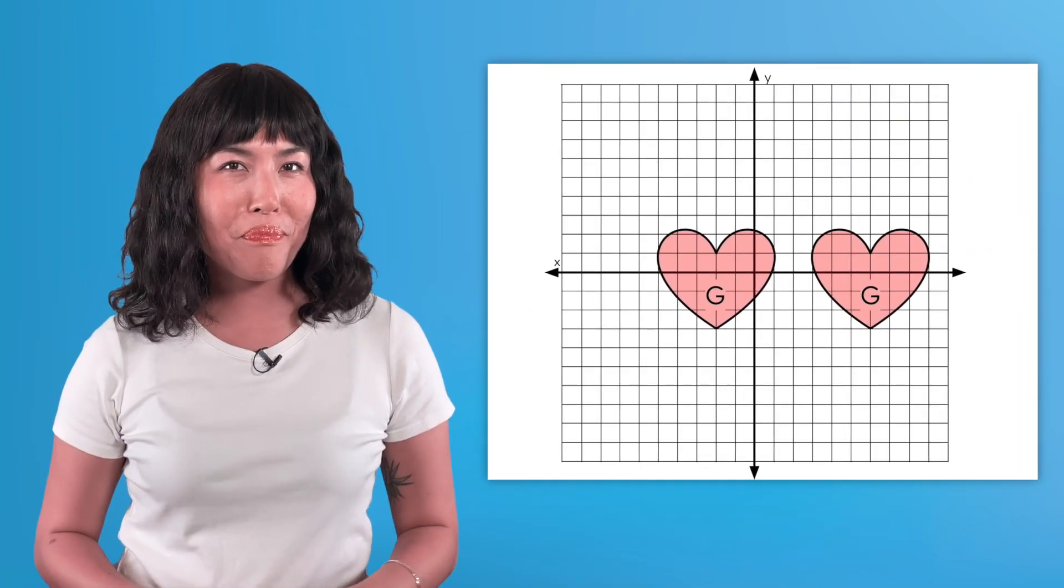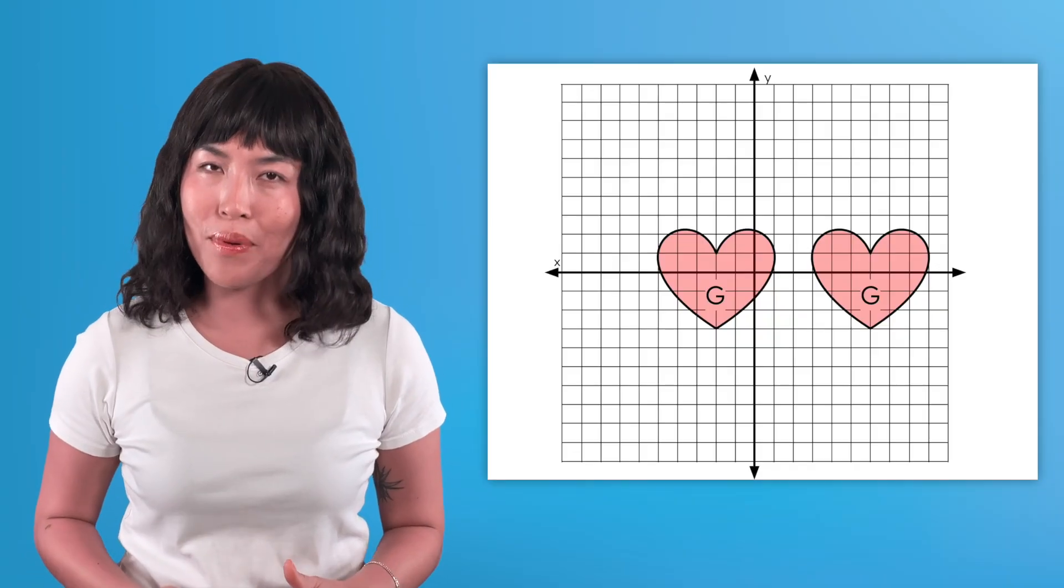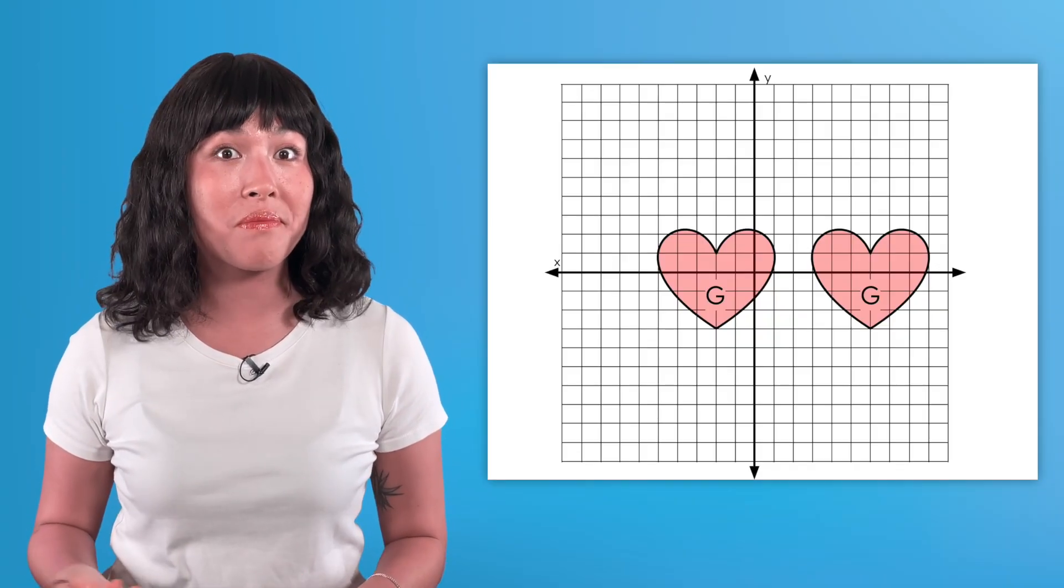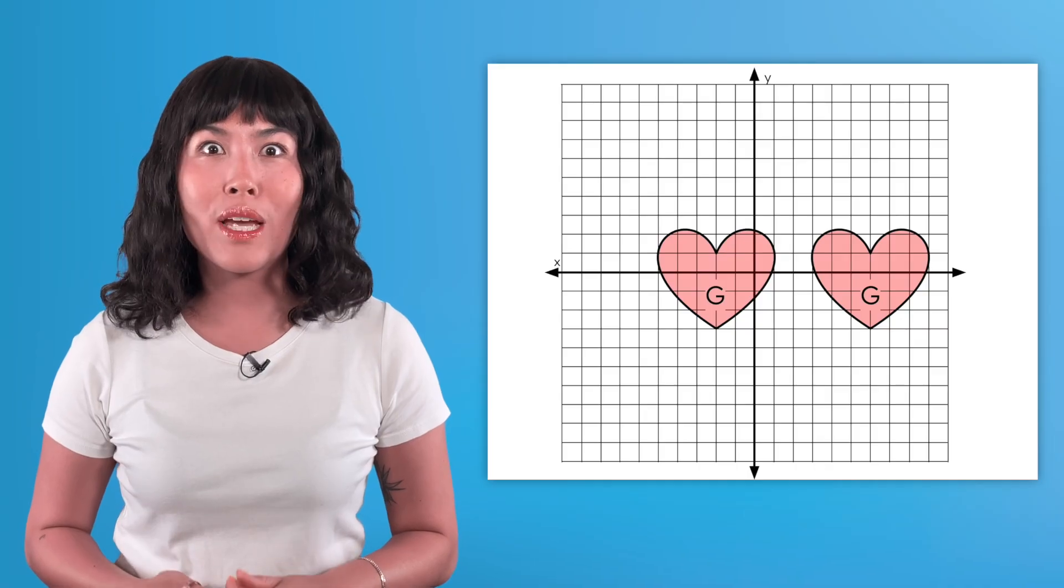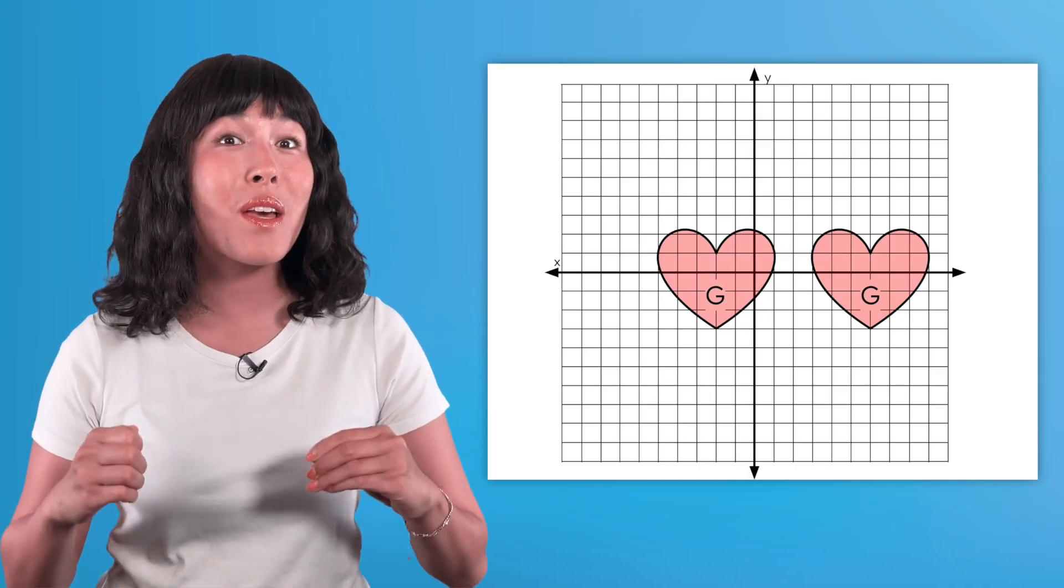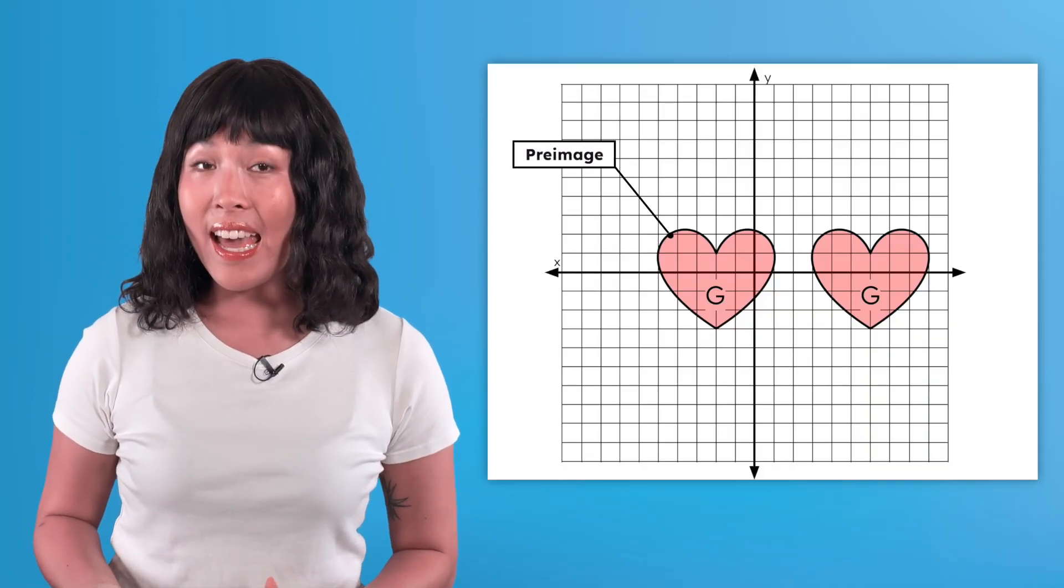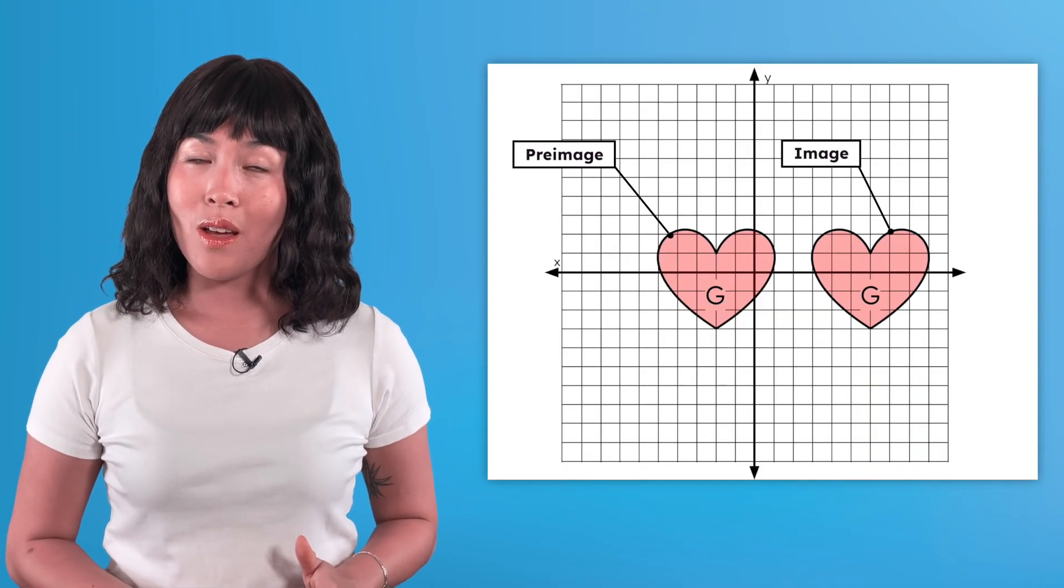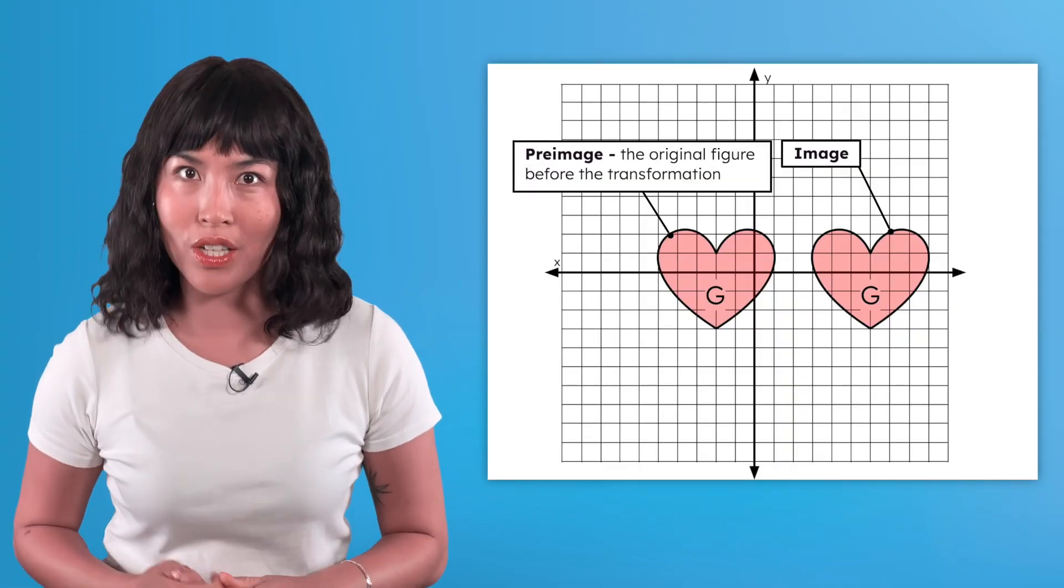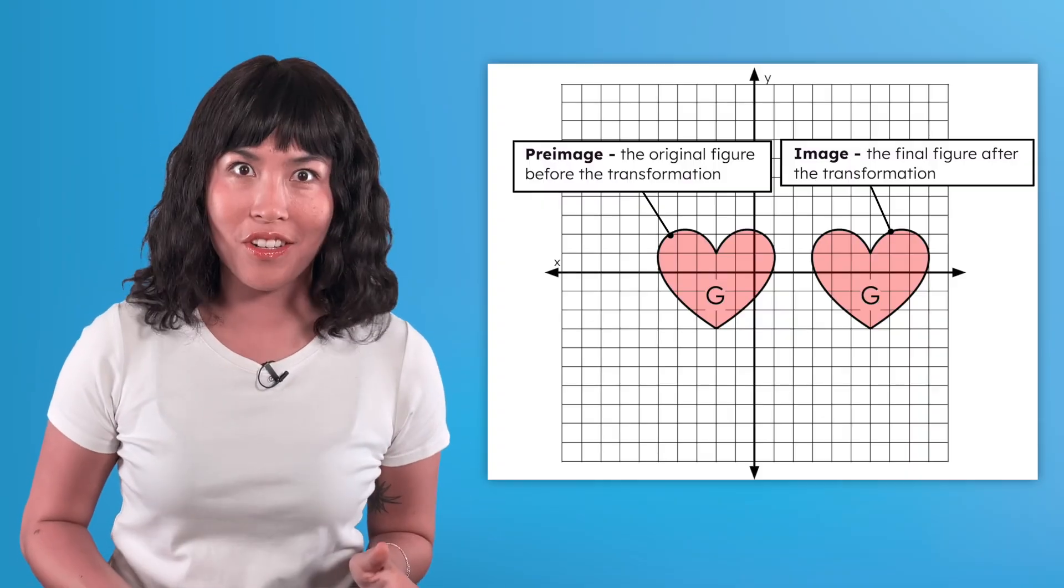Let's just say we showed this to a stranger who didn't see the translation happen. How would they know which heart was the original? They wouldn't. That's why when we're working with transformations, it's important to distinguish between the pre-image and the image. The pre-image is the original figure before the transformation. The image is the final figure after the transformation.